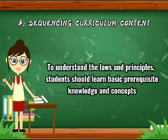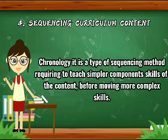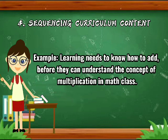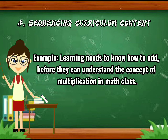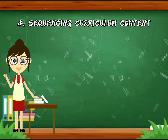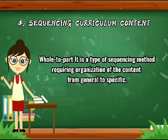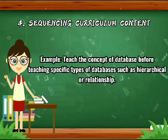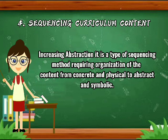Third, chronology — a sequencing method requiring teaching simpler component skills before more complex skills. Example: learners need to know how to add before they can understand multiplication in math class. Fourth, whole-to-part learning — requiring organization of content from general to specific. Example: teach the concept of a database before teaching specific types such as hierarchical or relational. Fifth, increasing abstraction — requiring organization of content from concrete and physical to abstract and symbolic. Example: start with presenting tangible geometric objects before teaching rules or theorems about them.